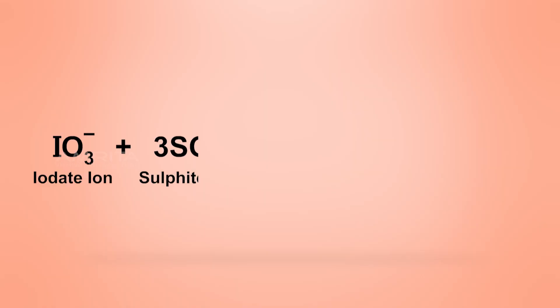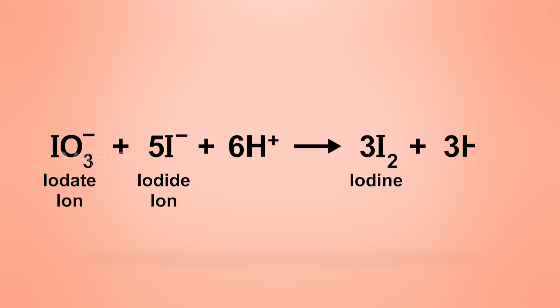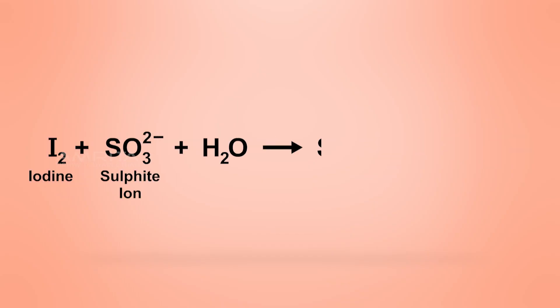In the first step, sulphite ions react with potassium iodate producing iodide ions. In the second step, iodide ions formed are oxidized to iodine by reaction with more iodate ions. In the third step, iodine formed in the second step reacts immediately with sulphite ions, forming iodide ions.